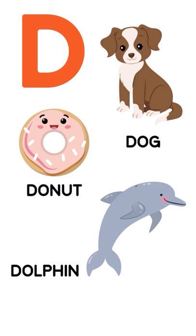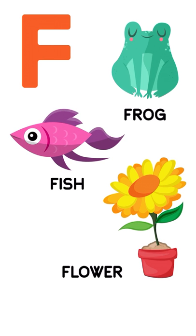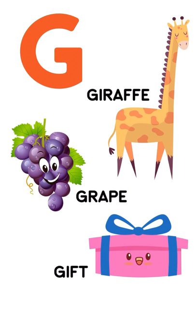D. Dog, Donut, Dolphin. E. Egg, Earth, Elephant. F. Frog, Fish, Flower.